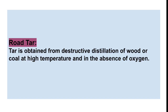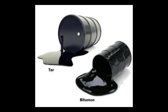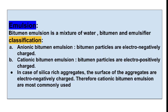Now, road tar. Tar is obtained from destructive distillation of wood or coal at high temperature and in the absence of oxygen. Tar involves destructive distillation, whereas bitumen is obtained by fractional distillation of petroleum.